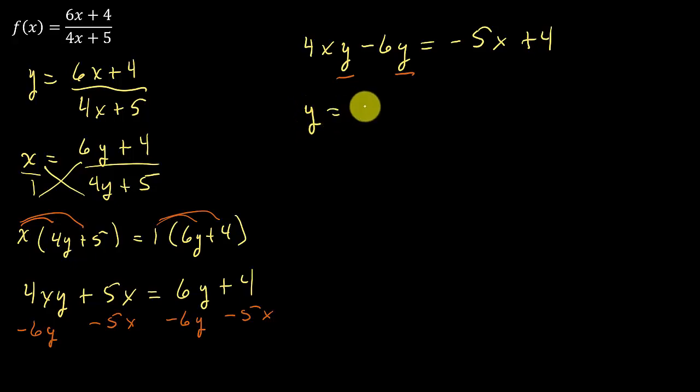So that's going to leave me y times 4x minus 6 equals negative 5x plus 4. All I did, I factored out the y.